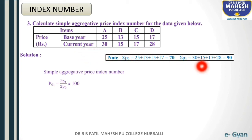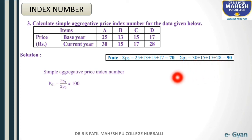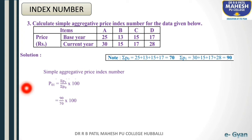The current year price values, denoted P1: 30 plus 15 plus 17 plus 28 equals 90, so summation P1 is 90. Now substituting these values: P01 equals 90 divided by 70 into 100, which equals 128.57. The simple aggregative price index number for this question is 128.57.